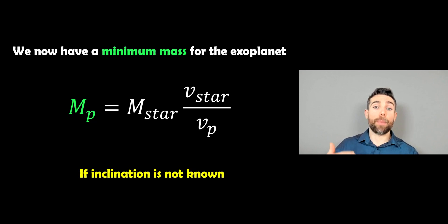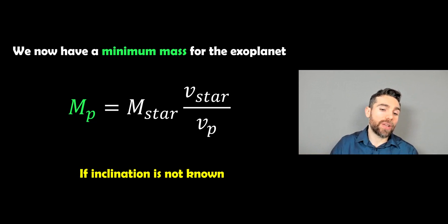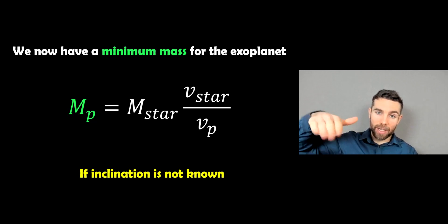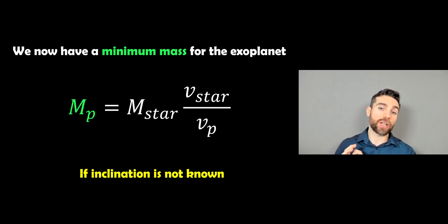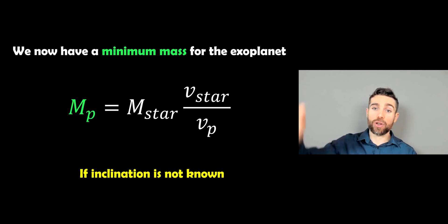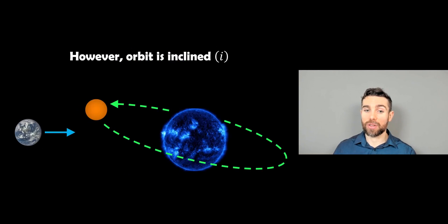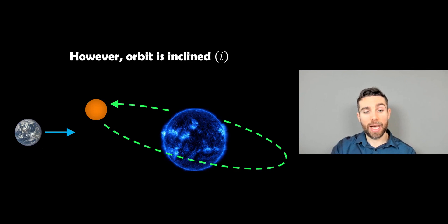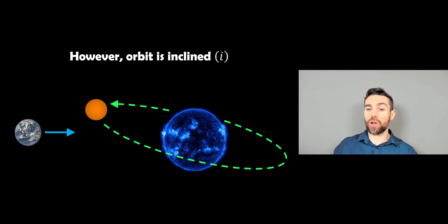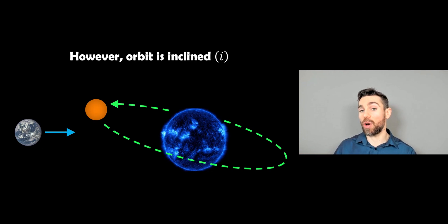We actually have only a minimum mass for the exoplanet. The reason is we don't know the inclination of the planet's orbit. As we look at it, it could be slightly inclined, which means the radial velocity we're measuring is not the full velocity — some of it is in a different direction and we're only picking up part of it. The orbit is never going to be absolutely perfectly edge-on, so there's some inclination, which means we're not measuring the true radial velocity. That's why it's referred to as the minimum mass — because we don't know i, the inclination.